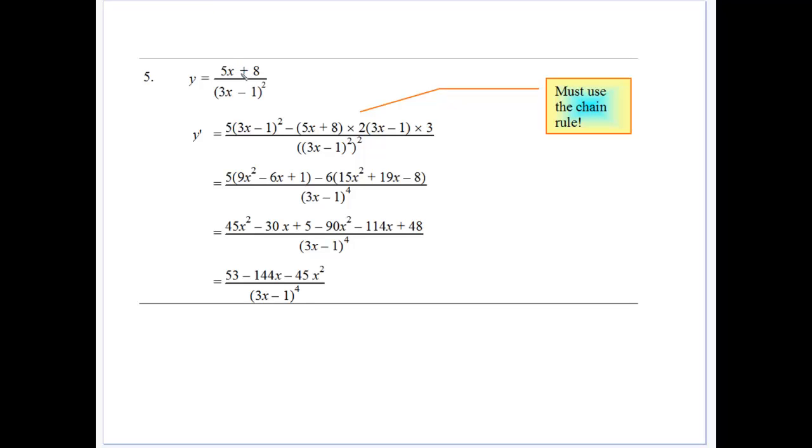So only in the fact that we've got 5x plus 8 over 3x minus 1 already squared. So we take out the denominator and square that again. So that's going to give us 3x minus 1 to the power of 4. But when we go to derive the denominator, so we derive our numerator, gives us the 5 times the denominator. Now minus.